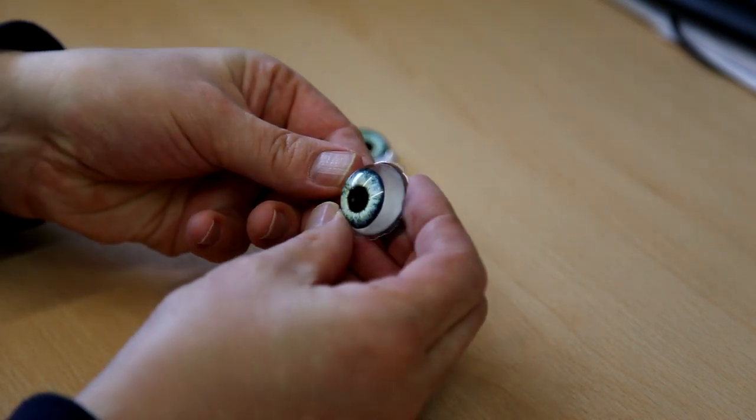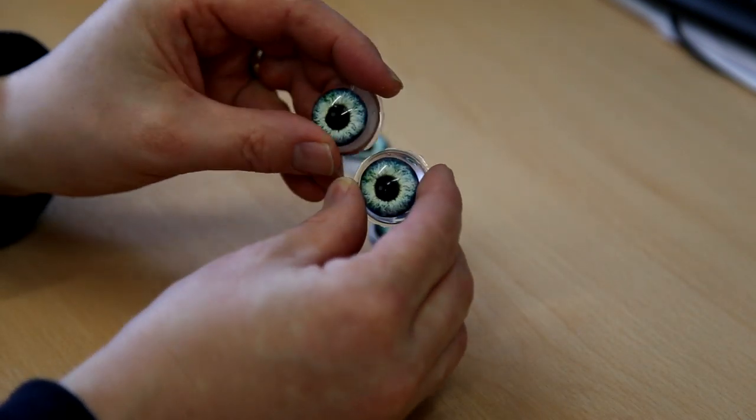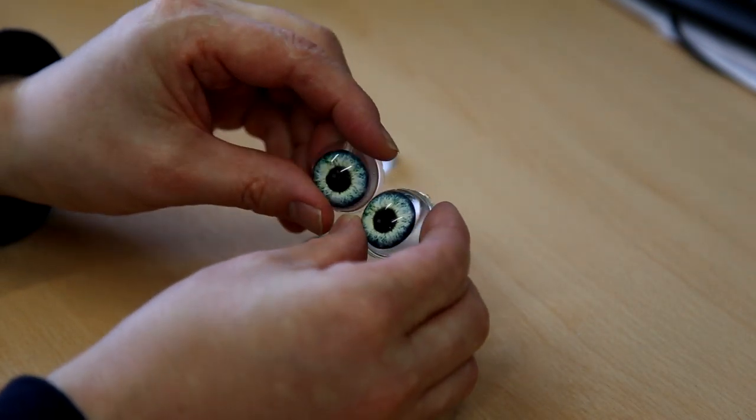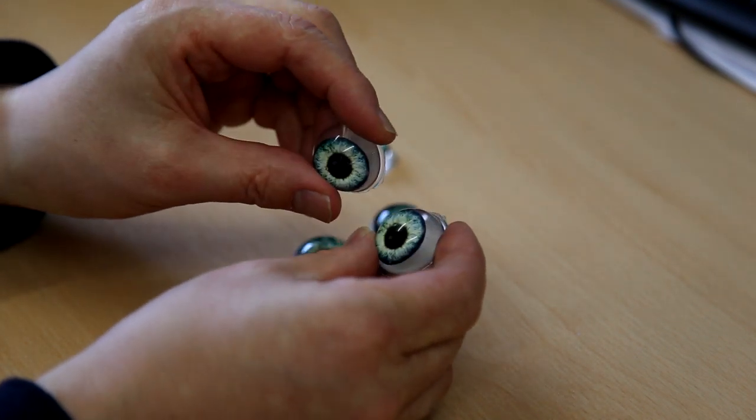Hiya, Nick from East Coast Fiberglass here with a very quick video on how to make these resin eyeballs. They're very simple to make. They are just some printed eyeballs encased in some water clear casting resin.